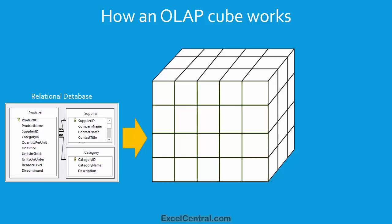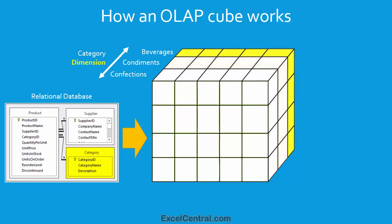And you'll also find it used in Microsoft's Help pages. So first, let's talk about dimensions. I'm going to add a dimension to this OLAP cube, and that is the Category dimension. You can see that this data would originate in the Category table. And you can see that the front slice of the cube is coming from rolled up totals in the Confections category. The center slice is coming from rolled up totals in the Condiments category. And the rear slice is coming from rolled up totals in the Beverages category.